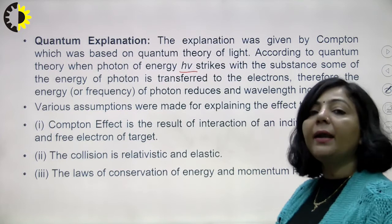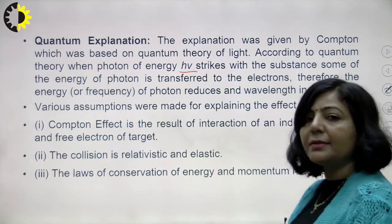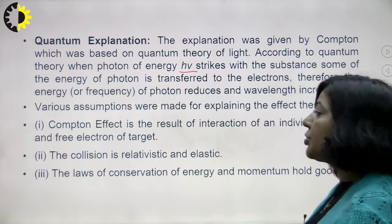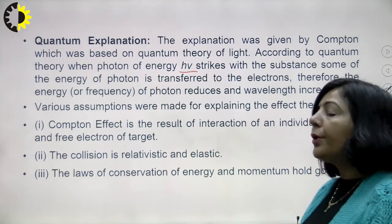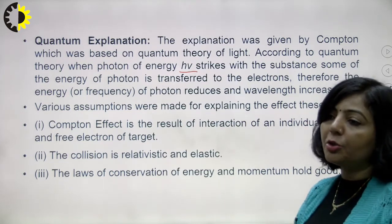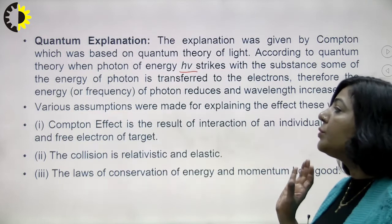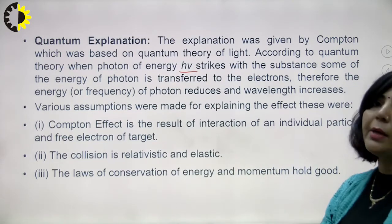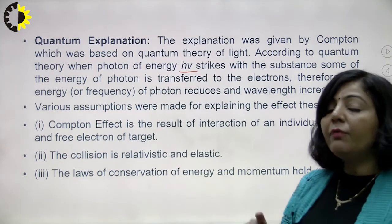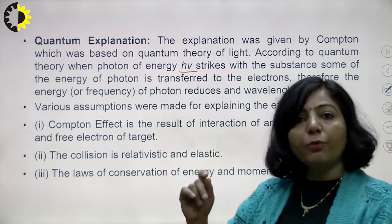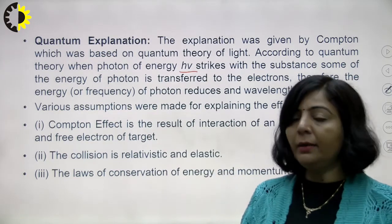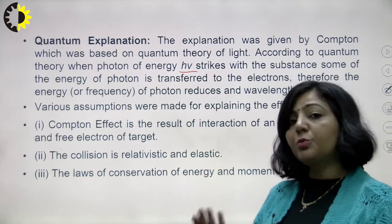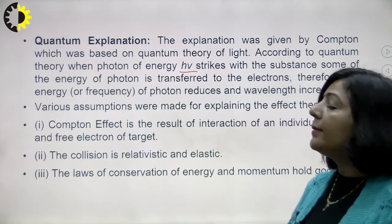The second assumption is that the collision is relativistic and elastic. The third assumption is that the law of conservation of energy and momentum holds good. Using these three assumptions, we will find a relationship for the Compton shift.